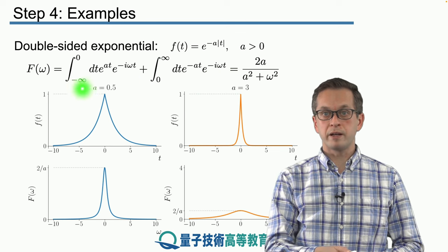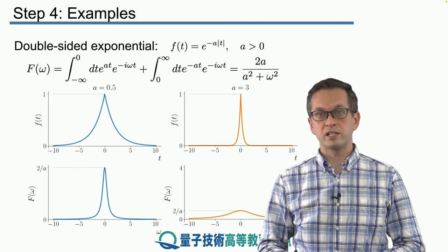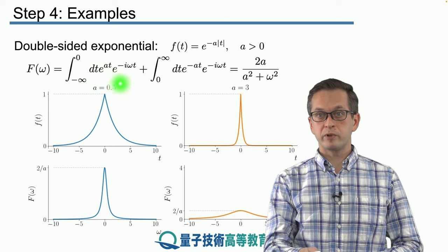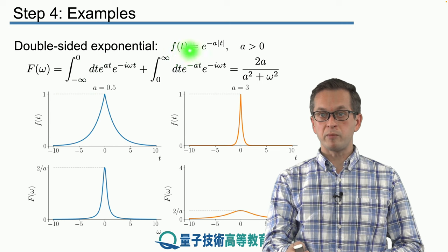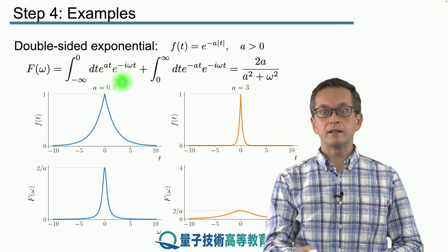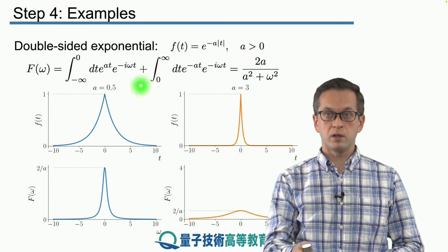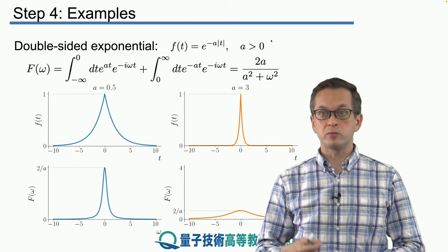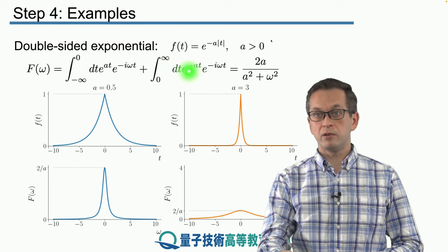and then we're going to add it to the integral over the positive time. So here we are expanding the forward Fourier transform capital F of omega as the integral from minus infinity to zero of this exponential e to the at, coming from our function, times the usual complex exponential.